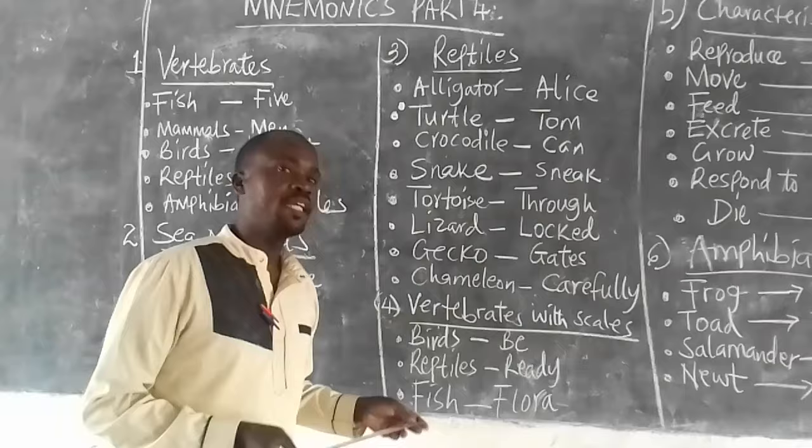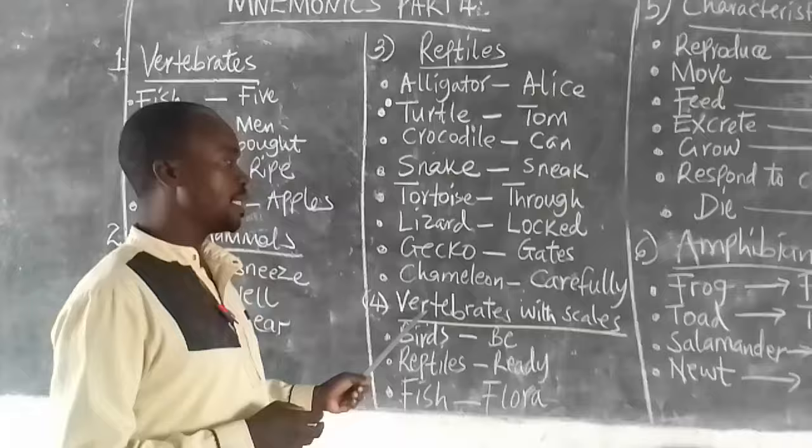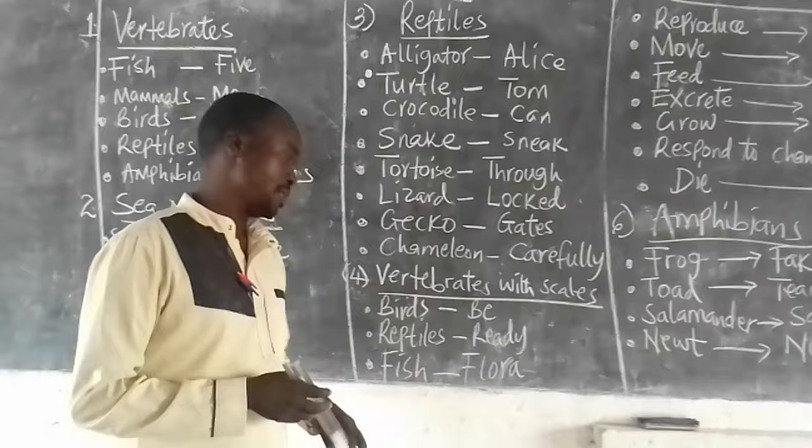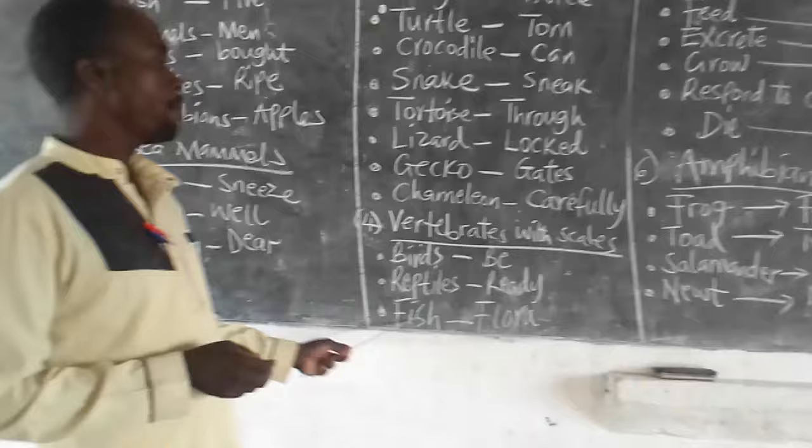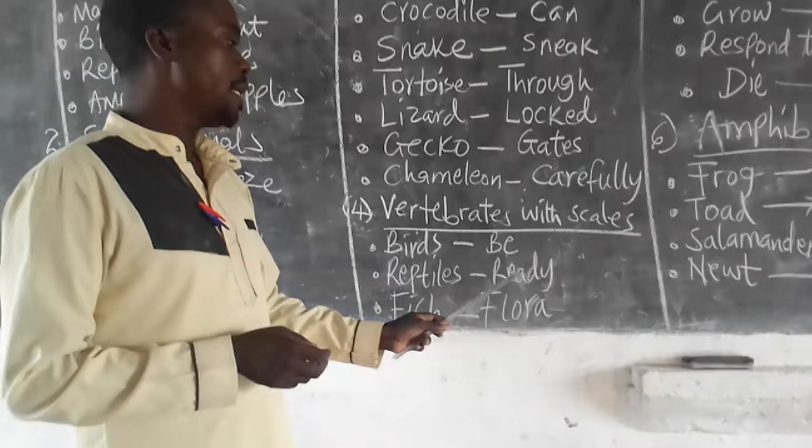Vertebrates with scales. They are basically three: birds, reptiles, and fish. Formula: be ready for a.